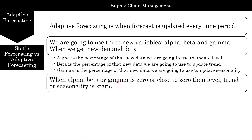When alpha, beta, and gamma are zero, level, trend, and seasonality are static. Zero alpha does not mean there is no level — this is another mistake people make. Alpha of zero essentially means you are not using any new data to update your level, and therefore it is static. Alpha of 100% means you're using all the new data and throwing out the old data. Alpha, beta, and gamma are all values between zero and one.